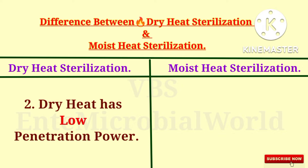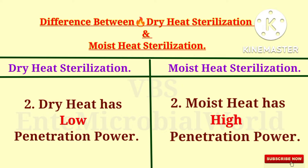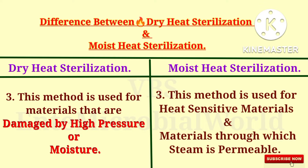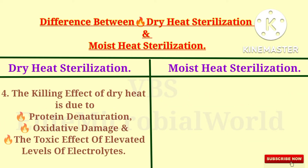Dry heat has low penetration power. Moist heat has high penetration power compared to dry heat. Dry heat sterilization method is used for materials that are damaged by high pressure or moisture. Moist heat sterilization method is used for heat sensitive materials and materials through which steam is permeable.